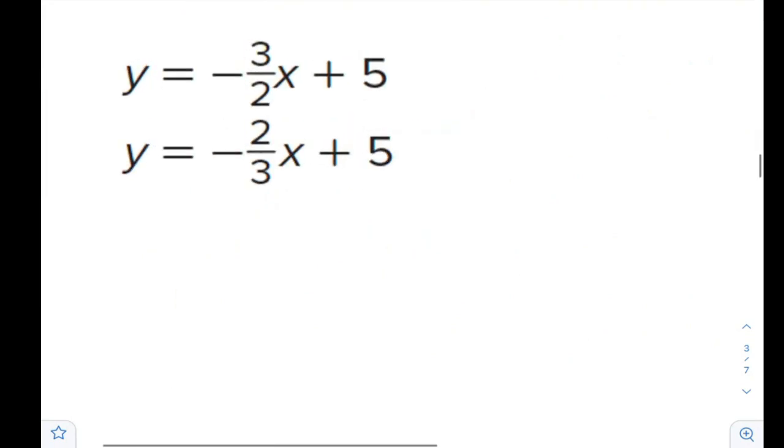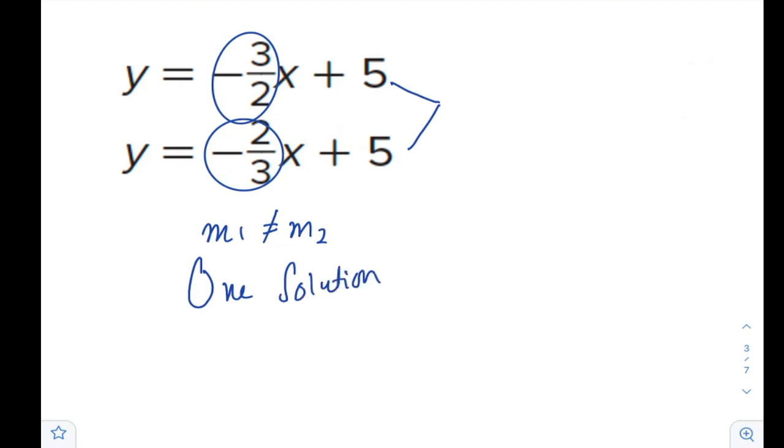Question 3. Without doing anything, it is ready for us in slope-intercept form. This is negative 3 over 2. This is negative 2 over 3. Slopes are not the same. However, b1 is equal to b2, but we don't care. So we have one solution, and it is consistent and independent.